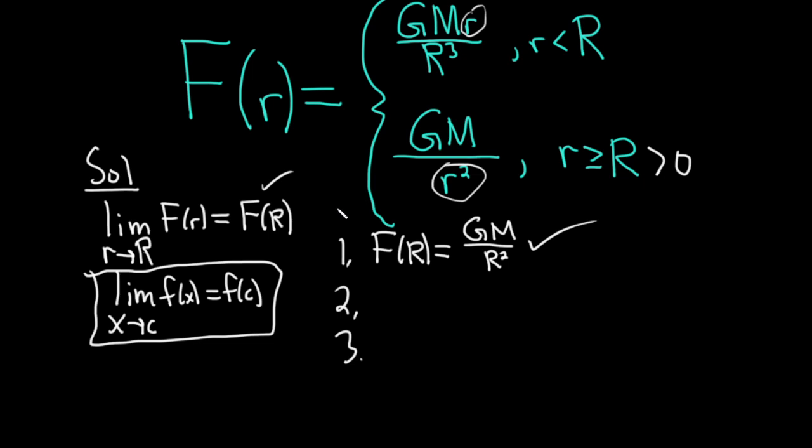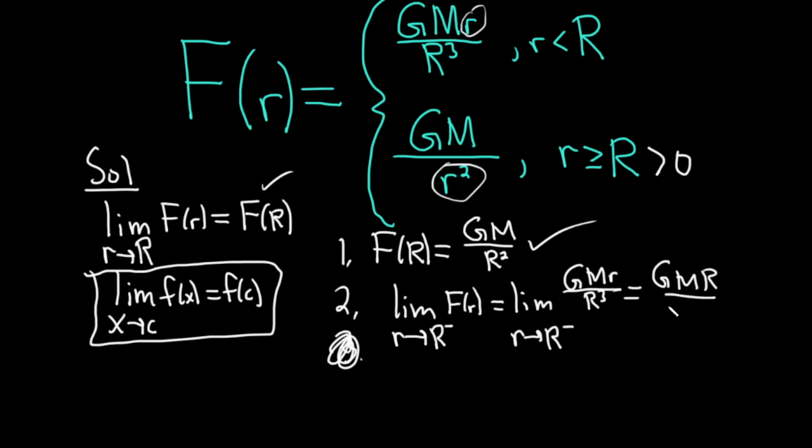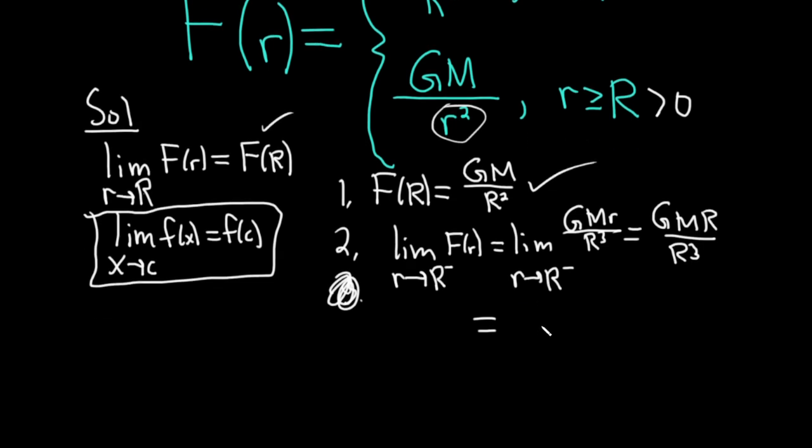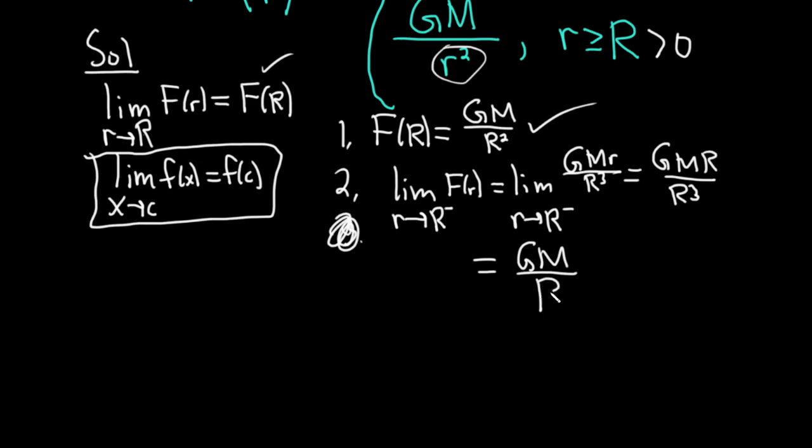The second thing we need to do is make sure the limit exists. Because we have a piecewise function with inequalities like this, we're going to look at one-sided limits. So let's look at the limit as little r approaches big R from the left. Because we're approaching from the left, that means little r is smaller than big R, so we're going to use the top piece here. This is the limit as little r approaches big R from the left of GM little r over big R cubed. So if you plug in big R here, there's no issues. You just get GM big R over big R cubed, and we end up with GM over big R squared, which was F of R. So it's looking really good.